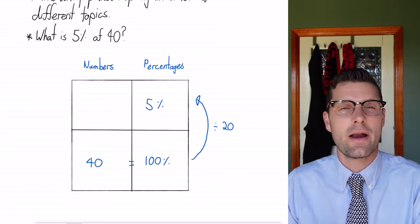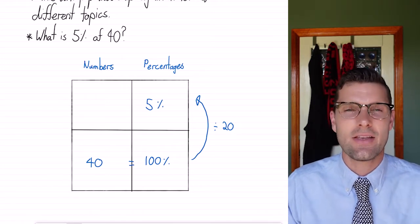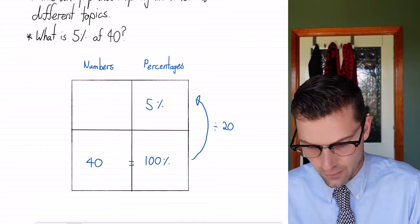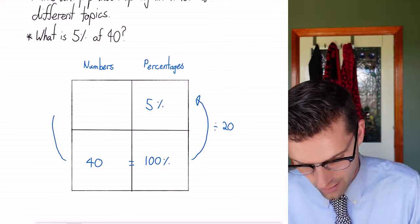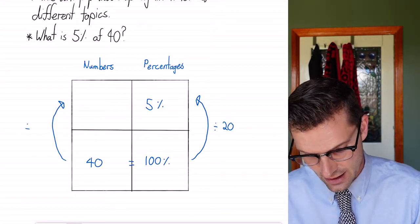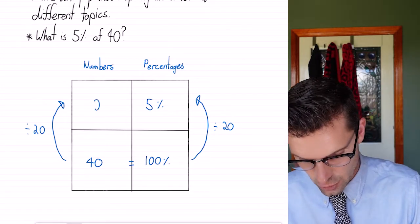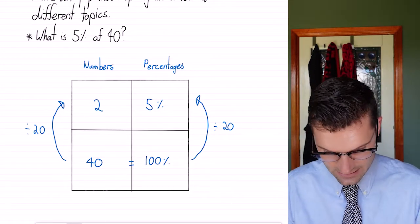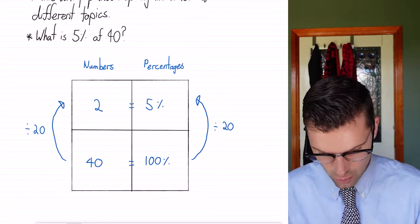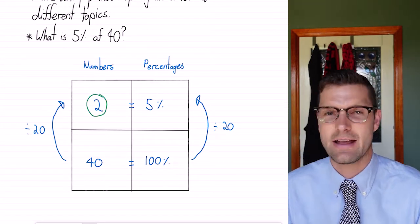So this principle of whatever happens to one side must happen to the other applies here. So if I've divided this by 20, I know on this side I've got to do the exact same thing and divide 40 by 20, which gives me the answer of 2. So 5% of 40 is equal to 2. And that is my final answer.